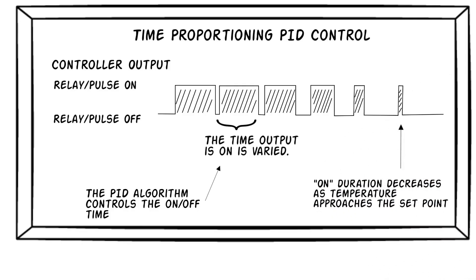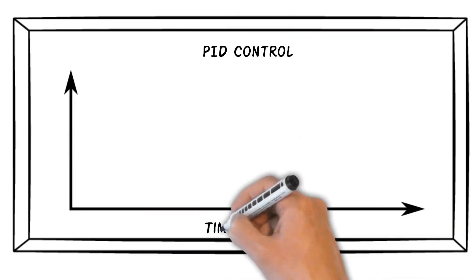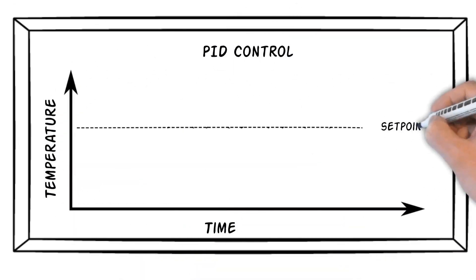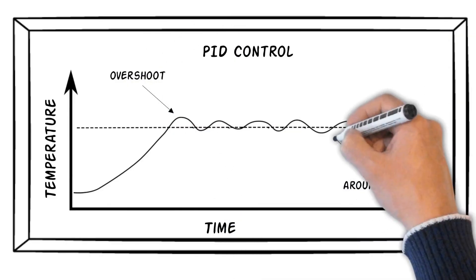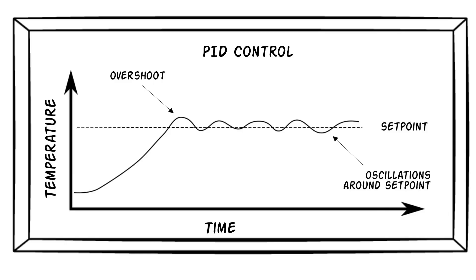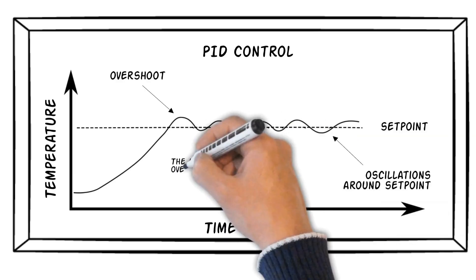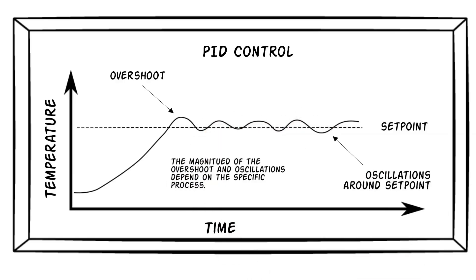This slide shows a typical time-temperature graph of PID control, and as you can see, the overshoot and oscillations are much less than those we saw for on-off control, resulting in much tighter control. The actual magnitude of the overshoot and oscillations depends on specifics of the process, including the thermal mass of what is being heated, as well as the heater size and placement.